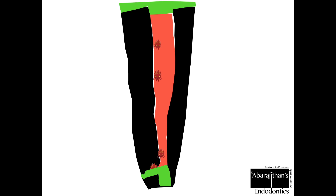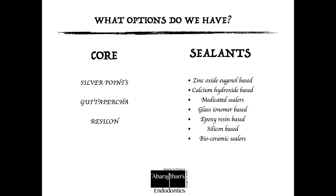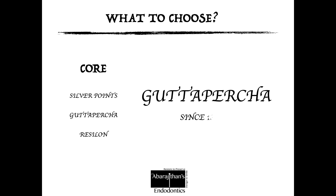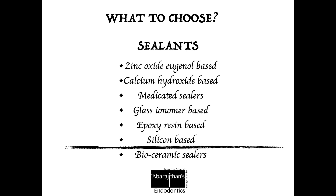This is the aim of any obturation. We are left with two options: the core material that fills the canal, and the sealants that cement this core material to the root canal walls. Without doubt, since 1847, gutta-percha has been the go-to material to fill root canals as a core material, and it is here to stay.